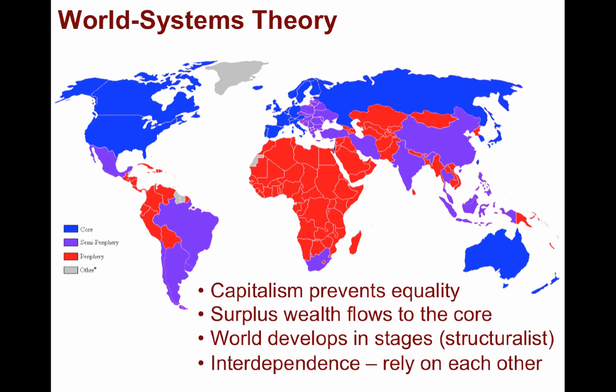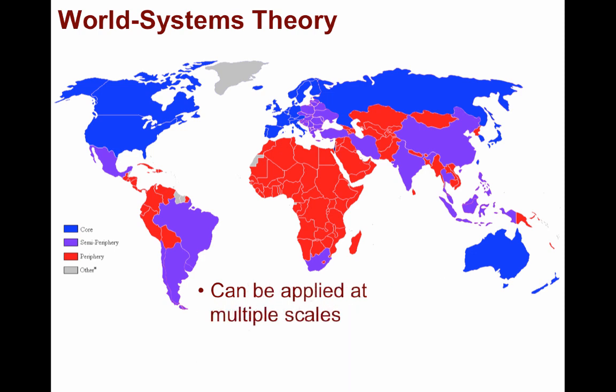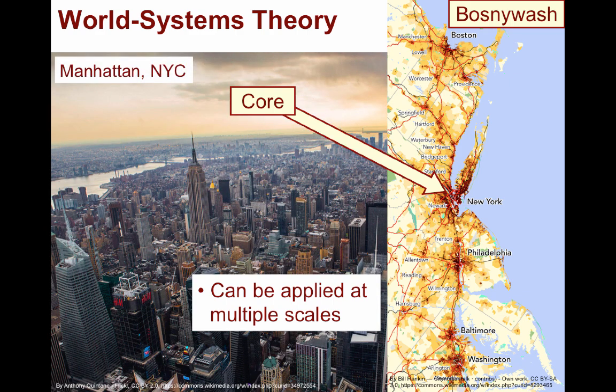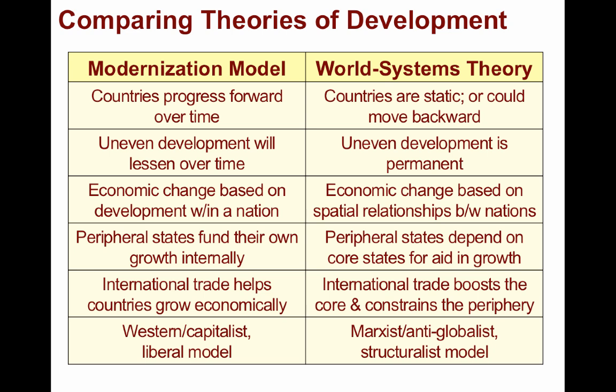A final attribute of world systems theory is that it can be applied at different scales. At the global scale, the United States is a core country within the world economy. However, the core-periphery concept can also be applied at the national scale, where Boswash is a core region within the United States. Zooming in further to the sub-national or local scale, New York City is a core area within the Northeast, and Manhattan is a core area within New York City. In sum, these are all models and theories providing different means of viewing the world. There are supporters and critics on both sides, between liberal and structuralist models. The truth may be somewhere in the middle, and where exactly that middle resides is subject to change over time and depending on people's perspectives.